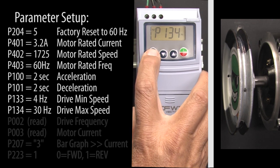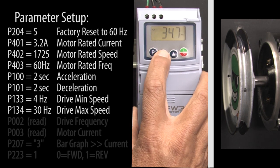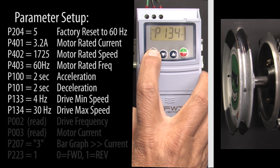Scroll to the max speed parameter, hit P, let's change our max speed to 30 Hz. Hit P to accept that.